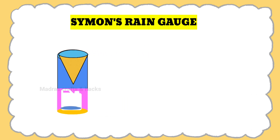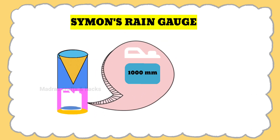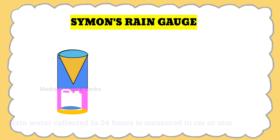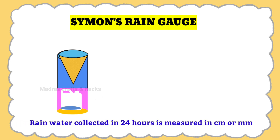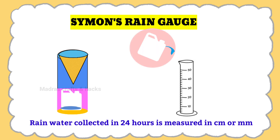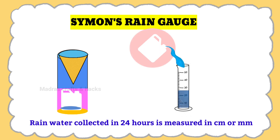The receiver has a capacity of 1000 millimetres of rain. The rainwater collected in 24 hours is measured using a measuring cylinder graduated in units of centimetres or millimetres. This is how the daily rainfall report is issued by the meteorological department.